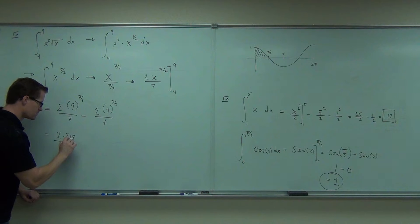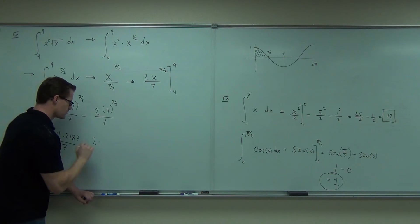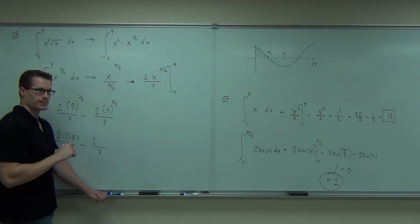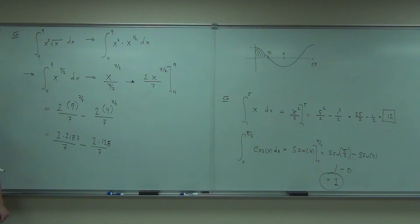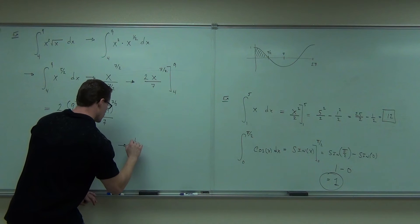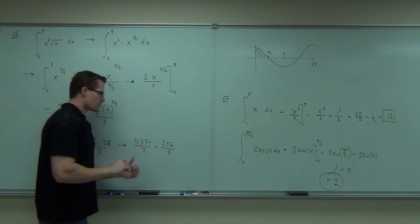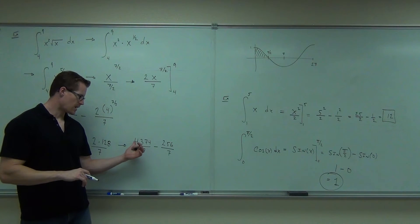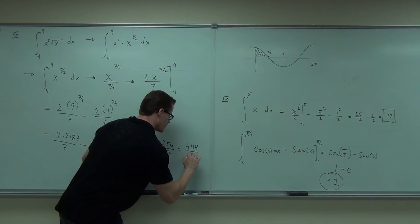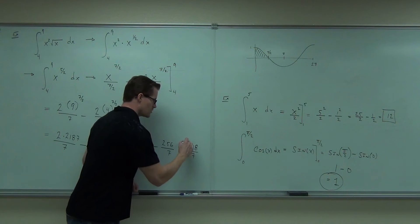So this is 2 times, someone tell me what 9 to the 7/2 is, or 3 to the 7th. Minus this is the square root of 4 is 2, then you do 2 to the 7th. What's 2 to the 7th? Are you okay on getting those numbers out? 2 times 2187 is what? This should be 256. Someone give me, since we already have a common denominator, 4374 minus 256 please. 4118. Does that simplify at all? It's not divisible by 7. Then you leave it.